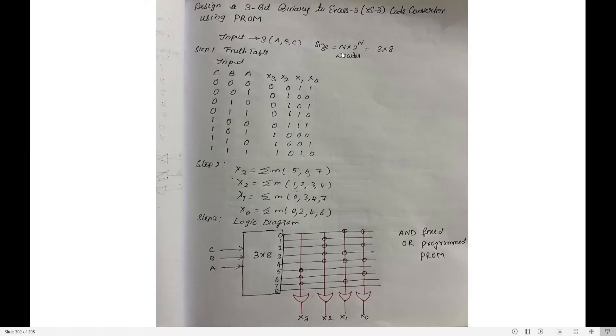Since it is PROM, first we need to decide on the decoder. What is the formula for decoder size? N into 2 power N. N is based on the input. Since 3-bit, N value is 3. So 3 into 2 to the power of 3, which is 8. To design a 3-bit binary to XS3 code converter, I need a 3-by-8 decoder.